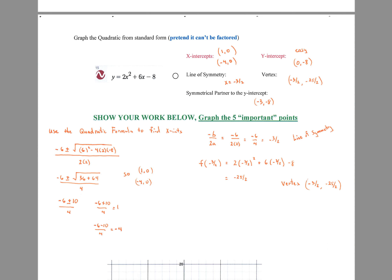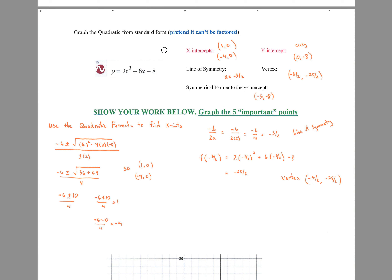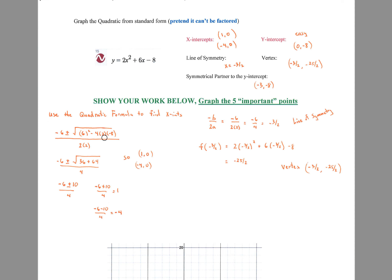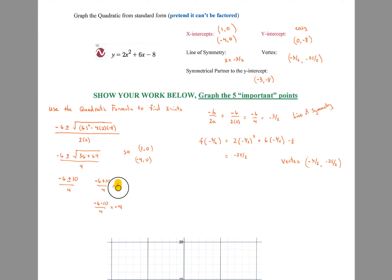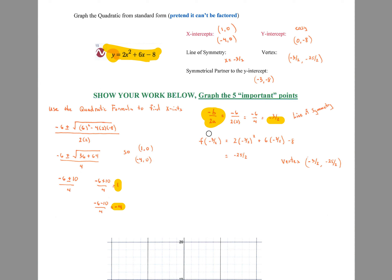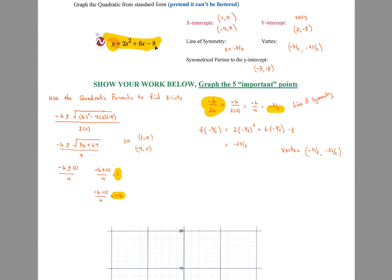Graph this quadratic from standard form. If it can't be factored, use the quadratic formula to solve for the x-intercepts — that's just setting y equal to 0. Once you know the x-intercepts, you know the line of symmetry is right between them. The midpoint between 1 and negative 4 is negative 1 and a half. Also, negative b over 2a instantly gives you the x-coordinate of the vertex — the line of symmetry. Plug that x value into the equation to find y. The y-intercept is easy — it's always just the constant, negative 8, because plugging in x equals 0 gives just the constant.